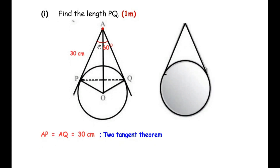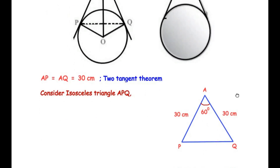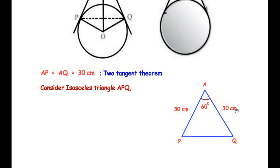Now let us focus on triangle APQ since we are trying to find the length of PQ. We redraw triangle APQ for easy reference and mark AQ as 30 cm. Since AP is 30 cm and AQ is also 30 cm, triangle APQ is an isosceles triangle with two equal sides, which means the base angles are also equal. Let us consider angle P as X and angle Q also as X.